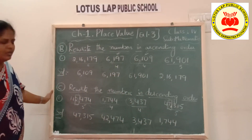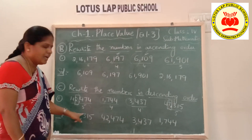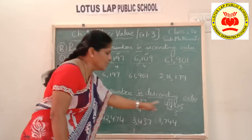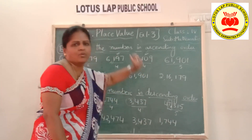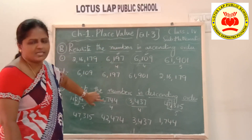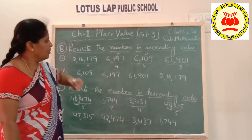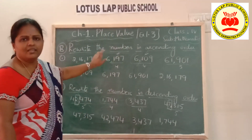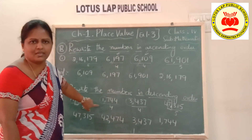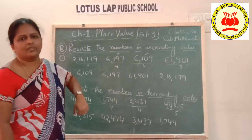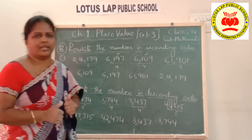This is how you do descending order — arrange the numbers from biggest to smallest. I hope you understood ascending and descending orders. You can solve the remaining sums to complete exercise 1.3. Thank you.